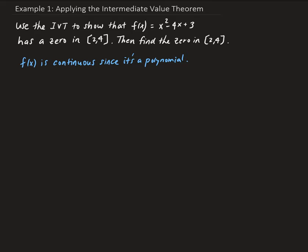Now we can apply the rest of the Intermediate Value Theorem. We need to evaluate the function at our endpoints on this interval. We evaluate the function at 4: that's 4 squared minus 4 times 4 plus 3, which gives us negative 1. And we evaluate the function at the other endpoint, 2: that's 2 squared minus 4 times 2 plus 3, which gives us a value of negative 1.